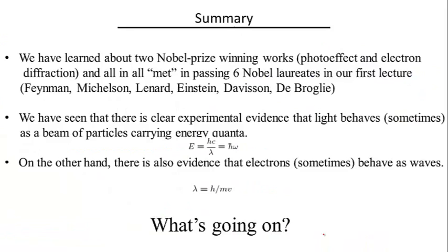So to summarize, let me just tell you what we've learned so far in the last two segments. So far in the first lecture, we have talked about two Nobel Prize winning works, the photoelectric effect and the electron diffraction. And all in all, we met in passing at least six Nobel laureates in our first lecture: Feynman, Michelson, Lenard, Einstein, Davison, de Broglie, so not too bad.